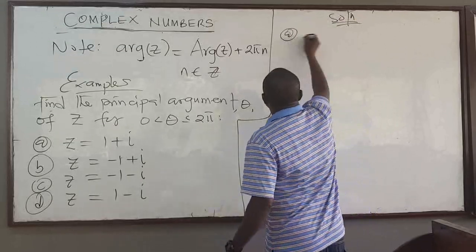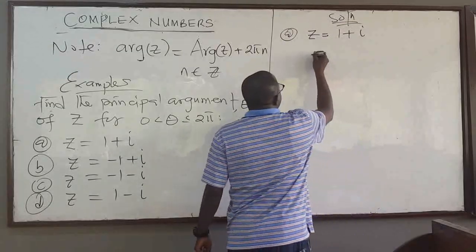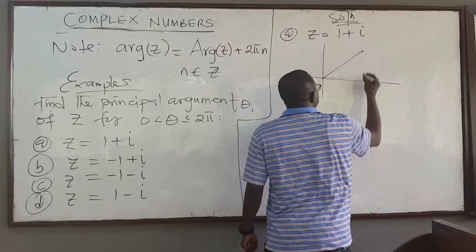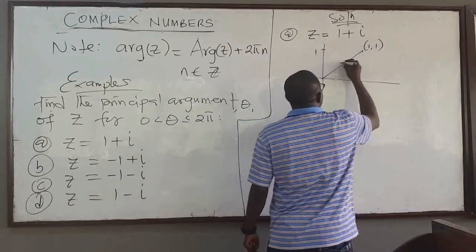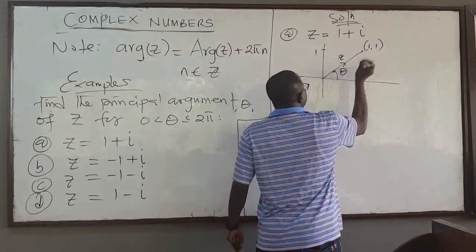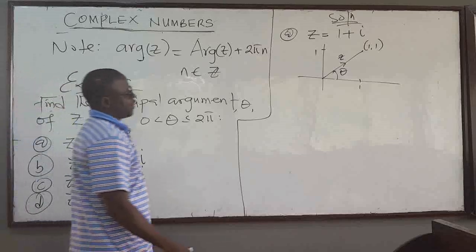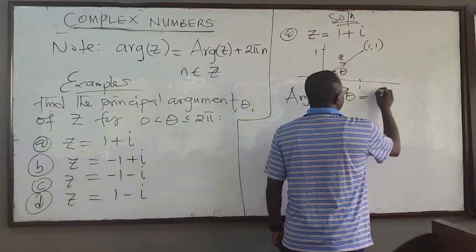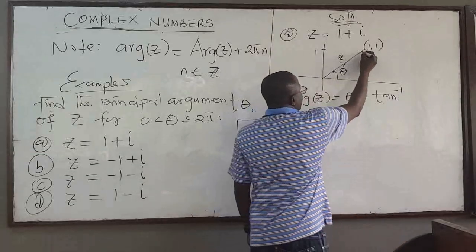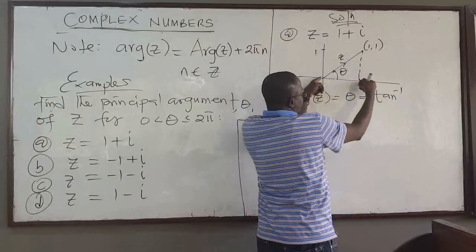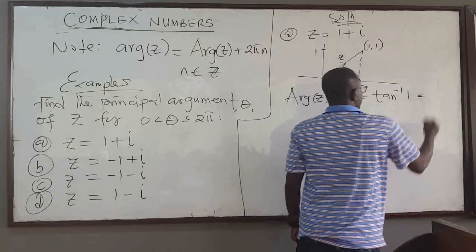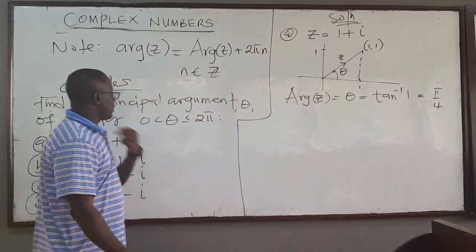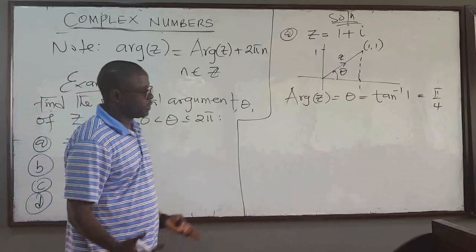Solution for (a): z = 1 + i. On the complex plane, the point is at (1, 1). The point z is in the first quadrant, and we want to find this angle — the principal argument. The argument of z is theta = arctan(y/x) = arctan(1/1) = arctan(1) = π/4. So theta = π/4, and π/4 lies in the interval [0, 2π]. In the first quadrant it's straightforward.